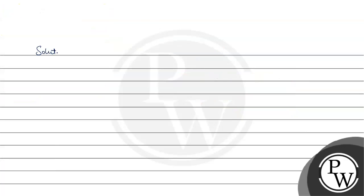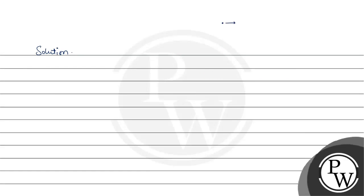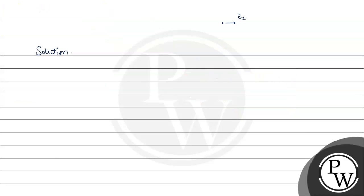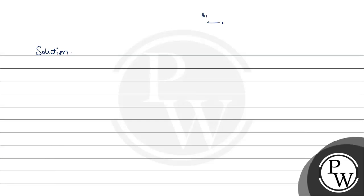For the solution, at point P there is a magnetic field B1 in a certain direction due to wire 1. Since the current in wire 1 is into the page, by the right-hand thumb rule we can find the direction of B1. For the net field to be zero at P, B2 must be equal in magnitude and opposite in direction to B1. So B2 must equal B1 in magnitude but point in the opposite direction.